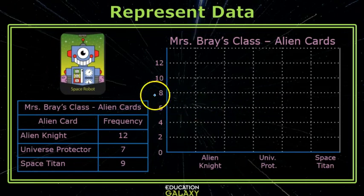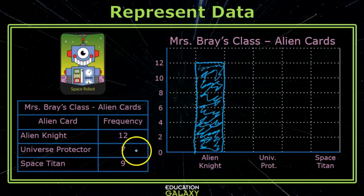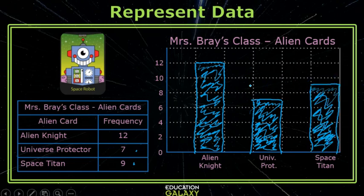You've made bar graphs before, so we will go quickly. For Alien Knight, I have 12, so I will mark the top of the line and then draw and color in my bar. Universe Protector has 7. That is halfway in between 6 and 8. There you have your review of bar graphs.